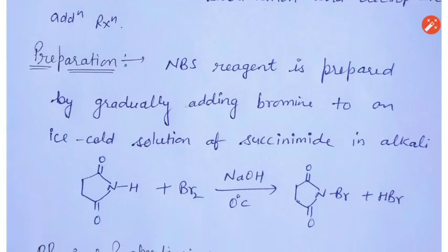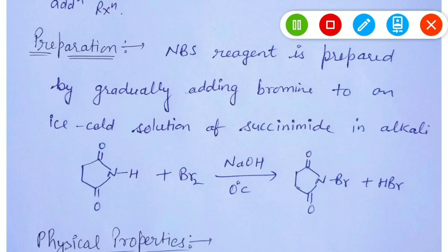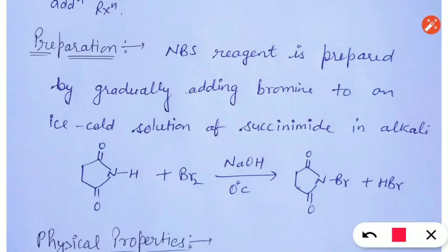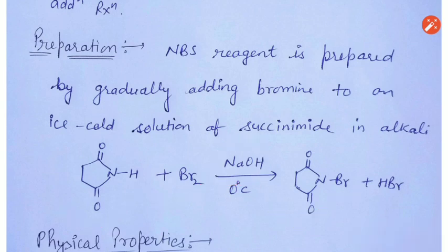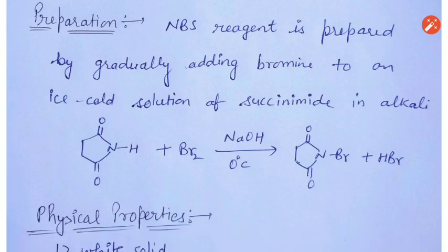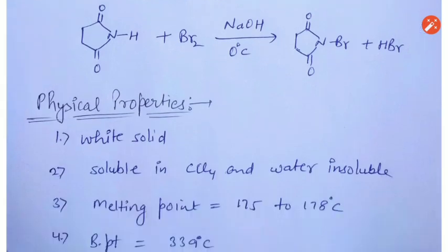Now we will study the preparation of N-Bromosuccinimide. N-Bromosuccinimide can be prepared by gradually adding bromine to succinimide in the presence of an alkali such as sodium hydroxide or potassium hydroxide, resulting in the formation of N-Bromosuccinimide.